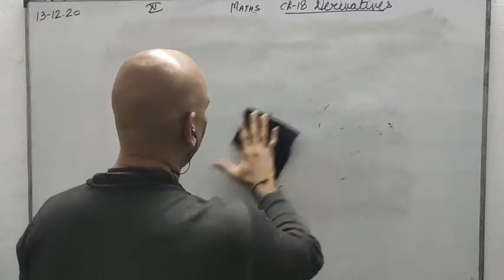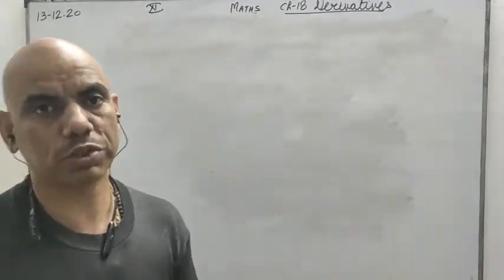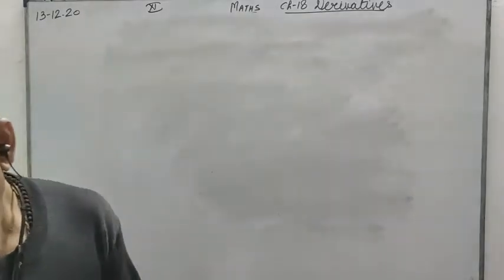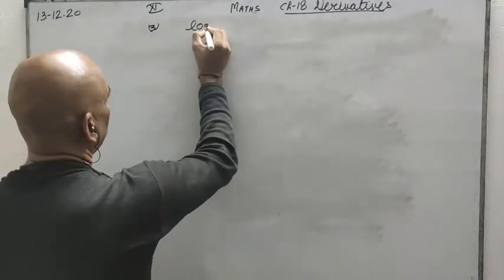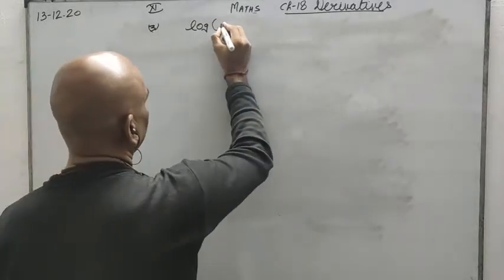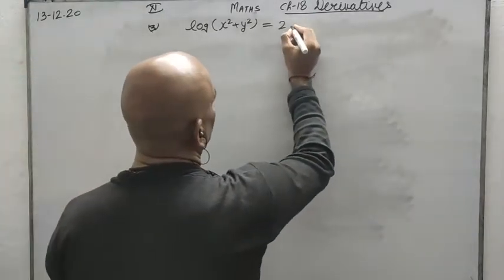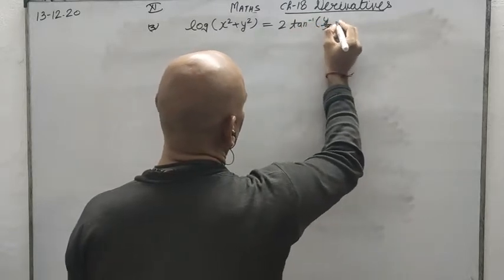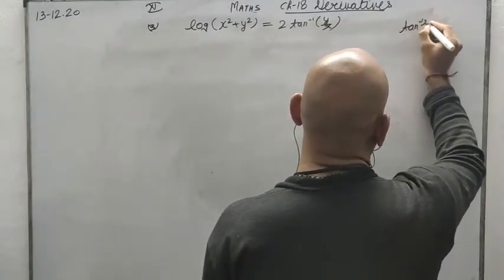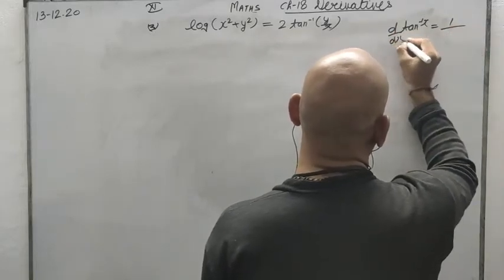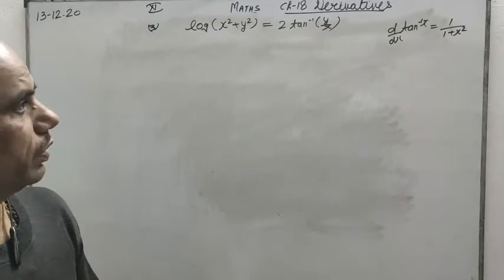The only thing to be taken care of is that whenever y is involved, you will have to write dy by dx with it. The differential of y takes place just like you make the differential of x. Now the third question involves log: log(x squared plus y squared) equals 2 tan inverse (y upon x). The differential of tan inverse x is 1 upon (1 plus x squared) — this is a new formula that will be applied in this question.